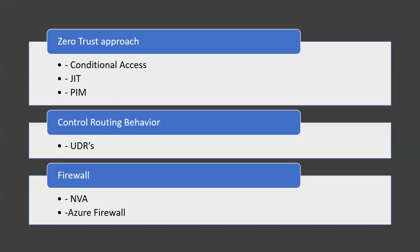Next we have zero trust. Perimeter-based networks operate on the assumption that all systems within the network can be trusted. But today's employees access their organizations' resources from anywhere, on a variety of devices and applications, which makes perimeter security controls irrelevant. Access control policies that focus only on who can access a resource are not good enough. Security admins also need to factor in how a resource is being accessed — not only the access, but how.